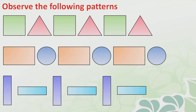Now let's see another one. Rectangle, circle, rectangle, circle, rectangle, circle — and then rectangle and circle again. Now, can you see here the rectangle is used in two ways — one in a horizontal way and one in a vertical way. The first one is vertical, then horizontal, vertical, horizontal, vertical, horizontal. If I ask you which one will be next — vertical.